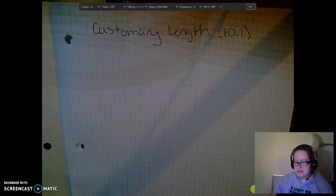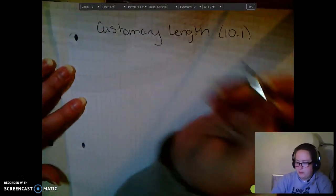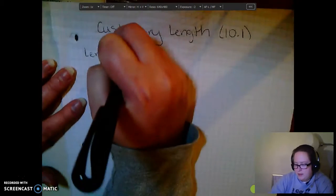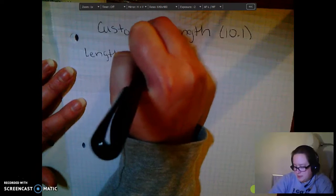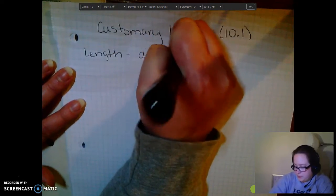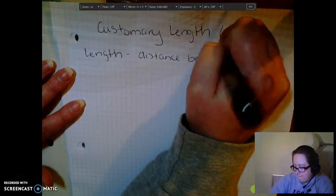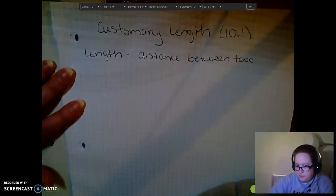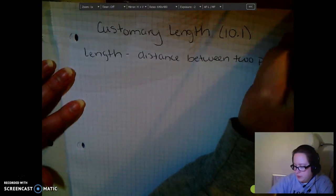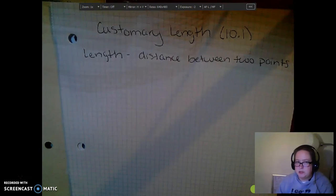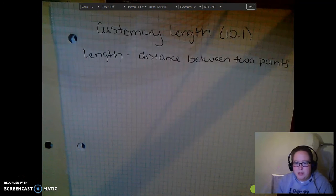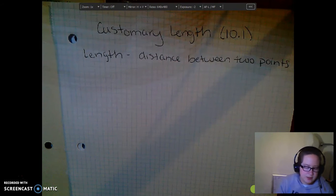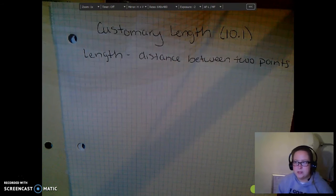So, what is length? First of all, before we talk, we have length. And length is the distance between two points. So length is the distance between two points. And a customary length is a length in which it uses the